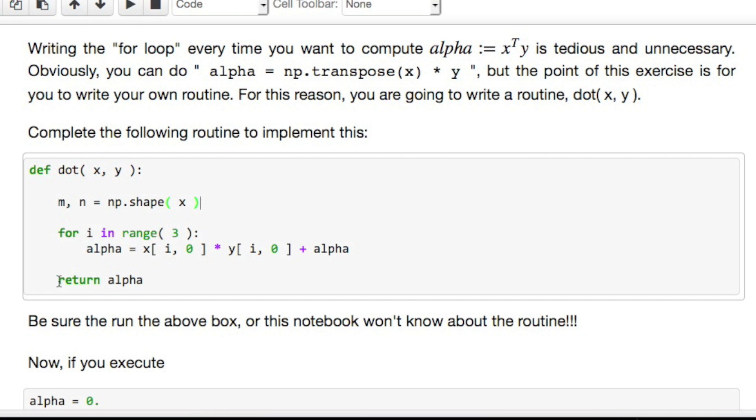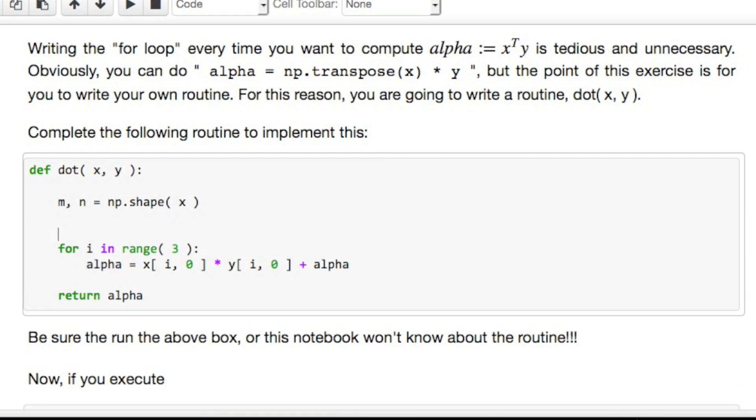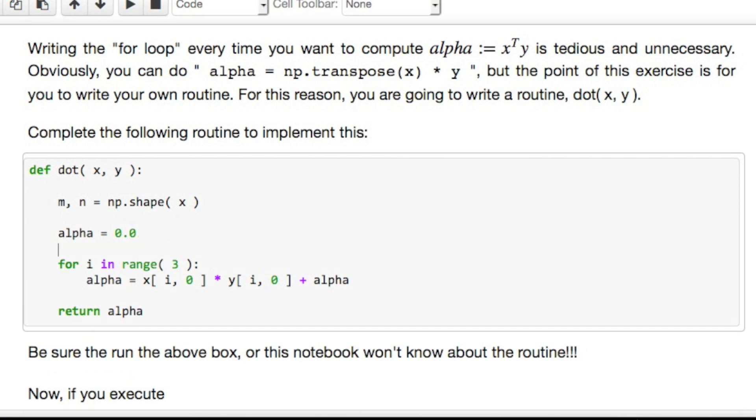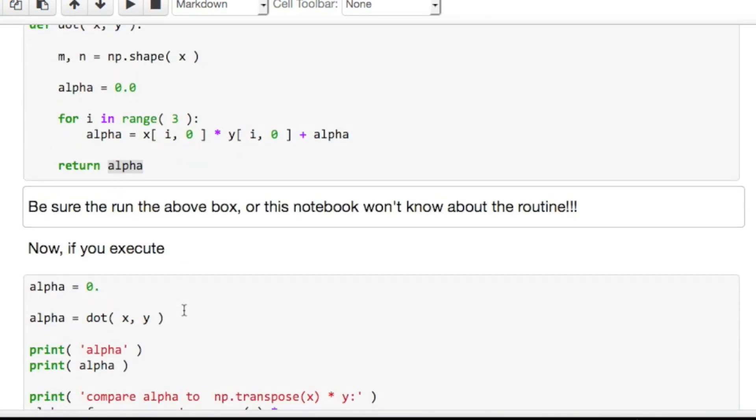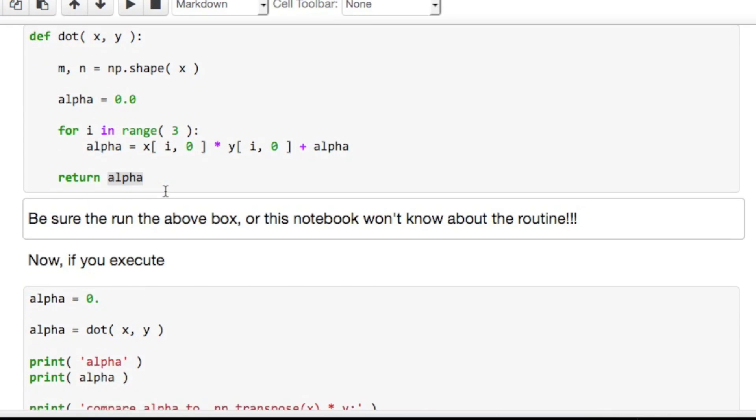And notice that the change now is that you're accumulating a result in alpha. There's one more thing that we need to do. We better set alpha equal to zero initially. We'll set it equal to 0.0 to make sure that it's computing floating point numbers. Reals, I guess, as far as you know. And notice that we want to have this routine return the computed value as a return value. And what that exactly means, we'll see in a minute. We'll execute this cell so that the notebook knows about the dot product routine.